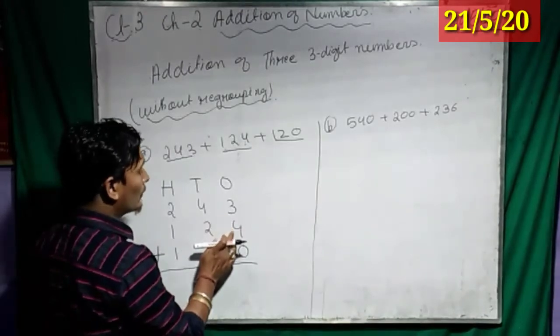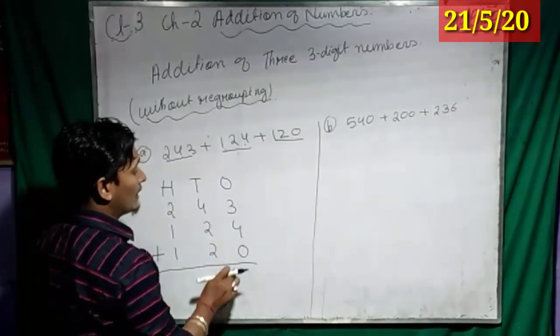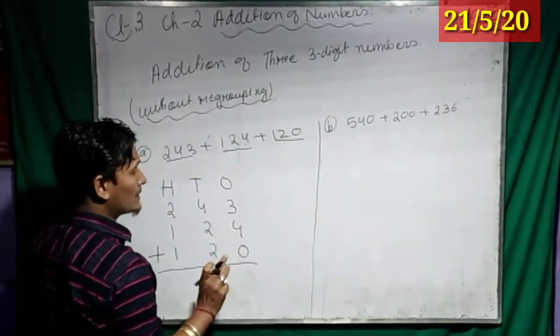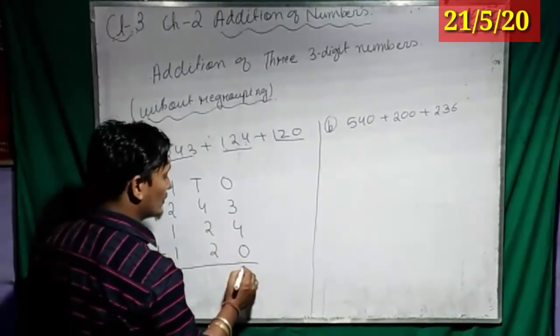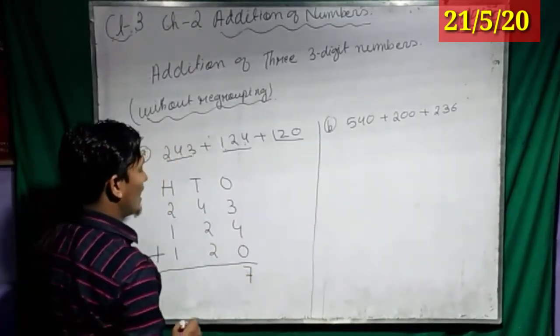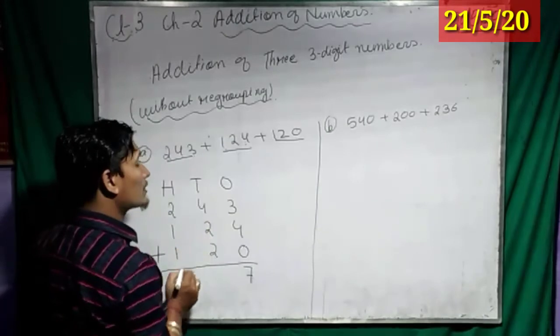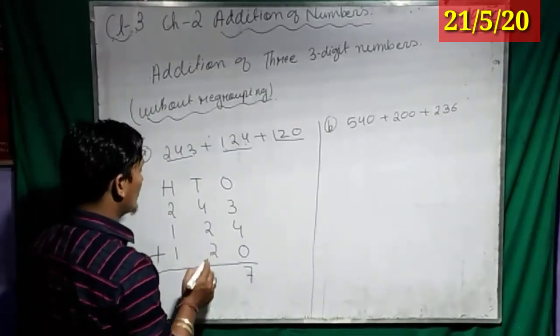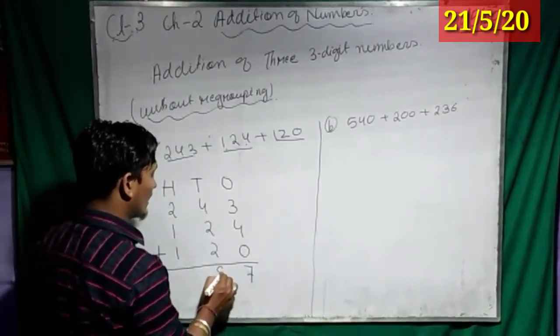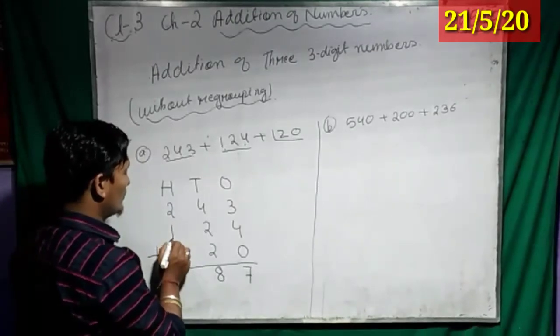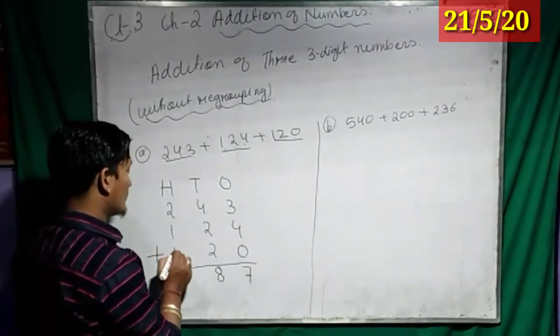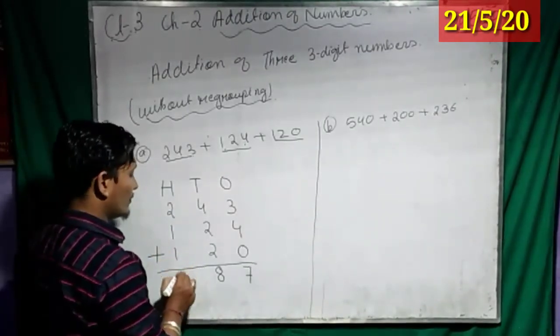So, 3 plus 4 is how much? 7. And 7 plus 0? 0 means nothing. So 7 plus 0 is 7. Now, 4 plus 2 is how much? 6. And 6 plus 2 is? Yes, 8. Now, 2 plus 1 is 3. And 3 plus 1? 4. Good.